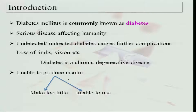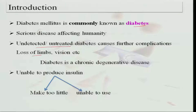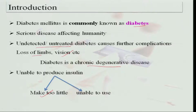Diabetes mellitus is commonly known as diabetes and it is a disease affecting humanity. Undetected and untreated diabetes can cause further complications. Sometimes people will not have any symptoms, therefore it can be undetected, and this can lead to loss of limbs because of formation of gangrene requiring amputation, and loss of vision because the nerves in the retina are also affected. This is a chronic degenerative disease because it keeps on affecting various organs and causes degeneration.